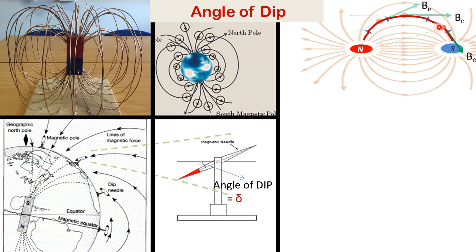A tangent drawn at any point on the magnetic field line gives the direction of the magnetic field. Similarly, when a dip meter is placed on the earth it directs itself towards the earth's magnetic field, and the angle that it makes with the horizontal is called the angle of dip.